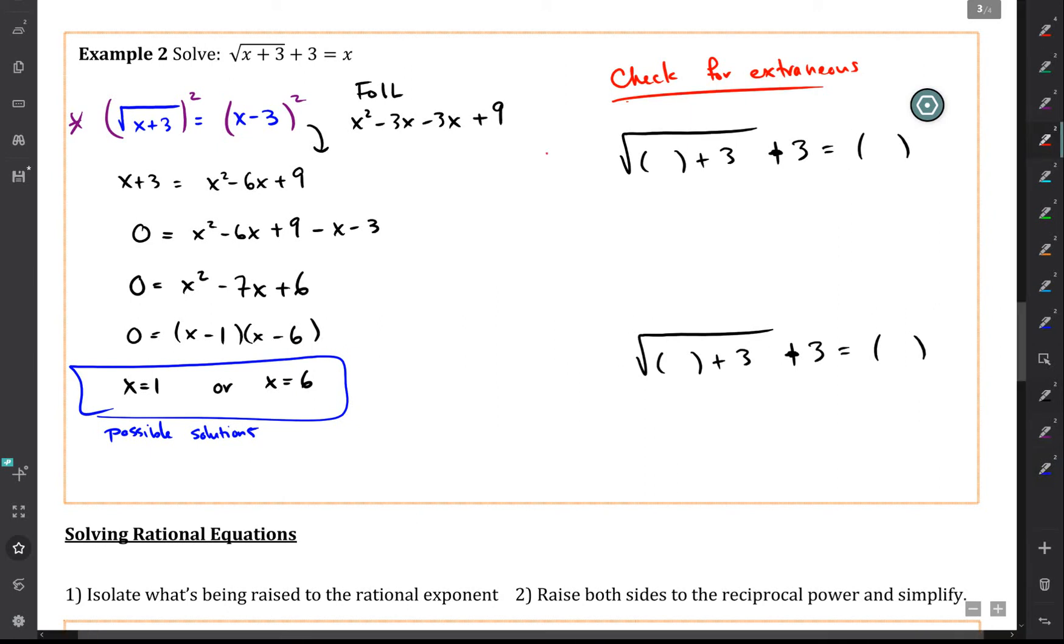And then you're going to check. So when I plug in x equals 1, I should see whether or not this is true. And if I plug in x equals 6, I should see whether or not it's true. So if I plug in 1, then I get the square root of 4 plus 3 equals 1. And again, we're asking whether or not this value of x actually makes the equation true or not.